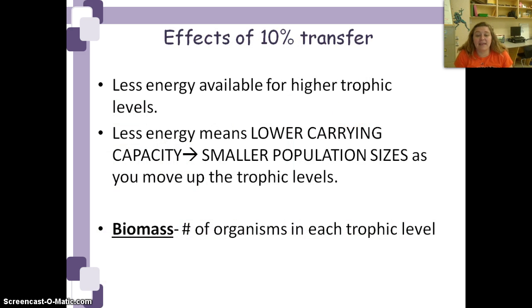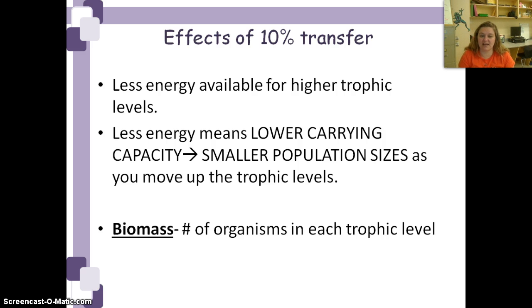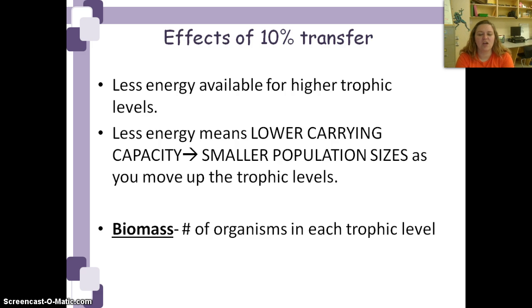That means there's going to be a lower carrying capacity — remember, that's the size of a population that can be supported by the ecosystem. The lower the carrying capacity, the smaller the population size. And whenever we talk about this, we have to include biomass, which is basically the number of organisms we find in each trophic level.